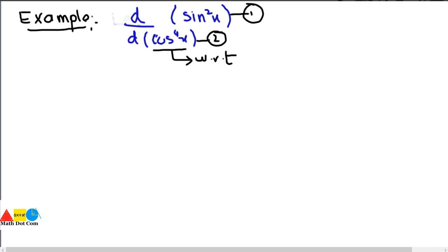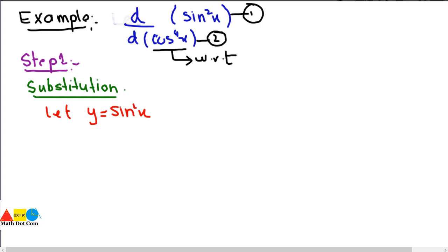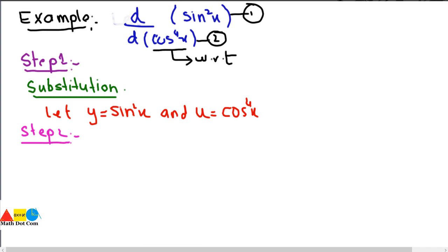Step number one is substitution. Let y = sin²x and u = cos 4x. Step number two is to find the derivative of each function with respect to x, that is, with respect to the variable involved in each function.